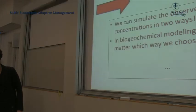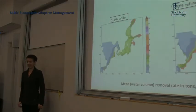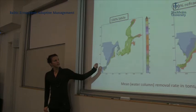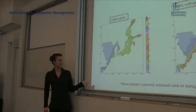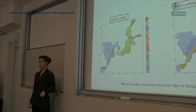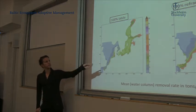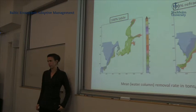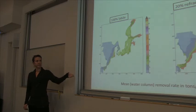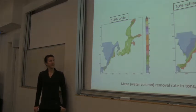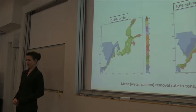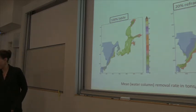But does it matter which way we do it? The difference is actually where the carbon is degraded. The figures show the mean removal rate in tons per year — black and brown indicate very high removal rates. In the refractory and labile experiment, we see larger gradients between the coastal and open sea areas. That could have implications for, for example, the carbon dioxide exchange with the atmosphere.